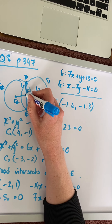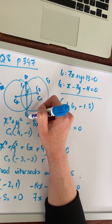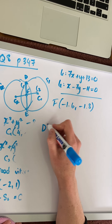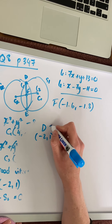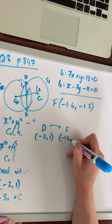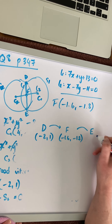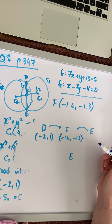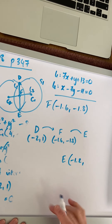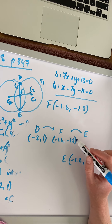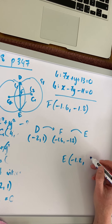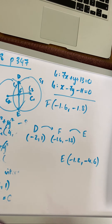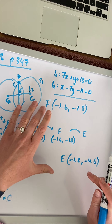We can then use the fact that F is the midpoint of the chord and use a translation method to go from point D to point E. Starting at D (-2, 1), going to F (-1.6, -1.8), and applying the same translation: from -2 to -1.6 is an increase of 0.4, so we get -1.2; from 1 to -1.8 is a decrease of 2.8, so we get -4.6. So point E is (-1.2, -4.6). That's one method — there are several, but this is one of the easier approaches.